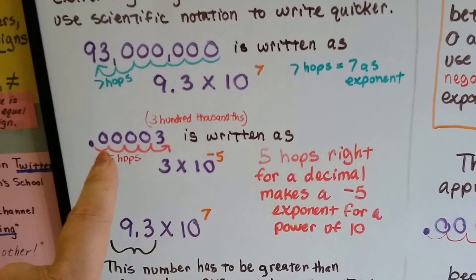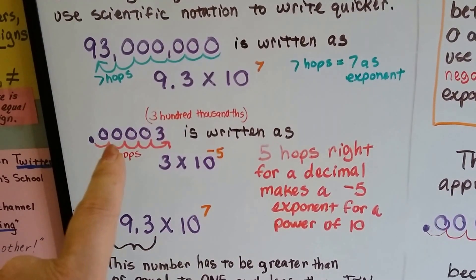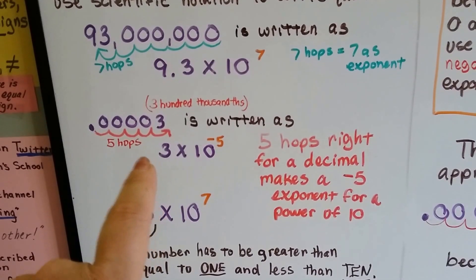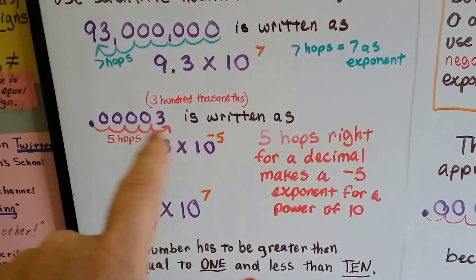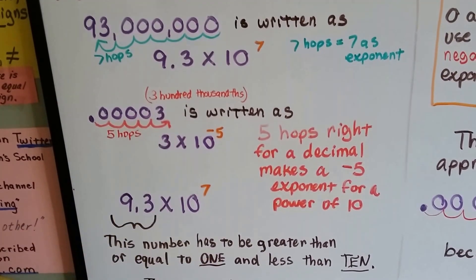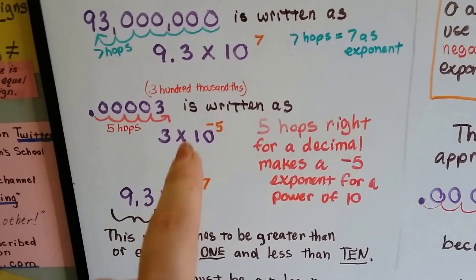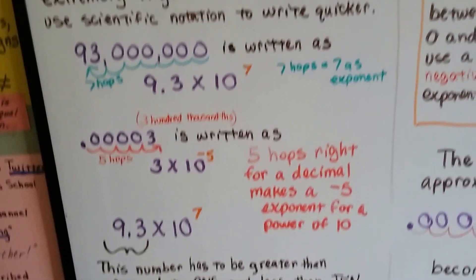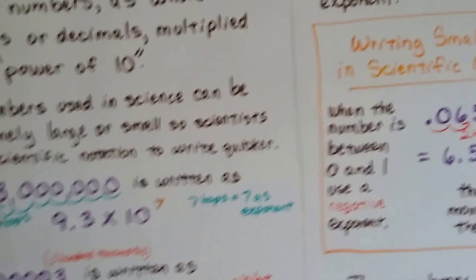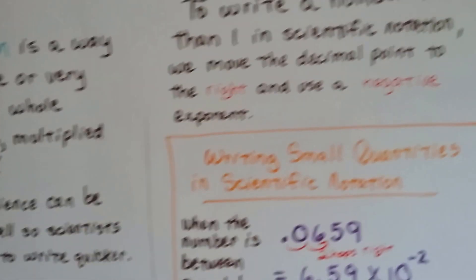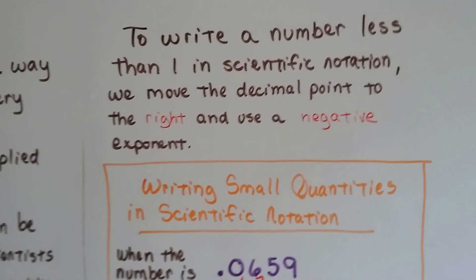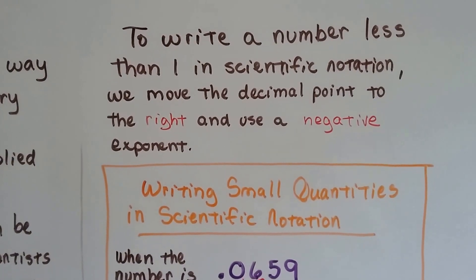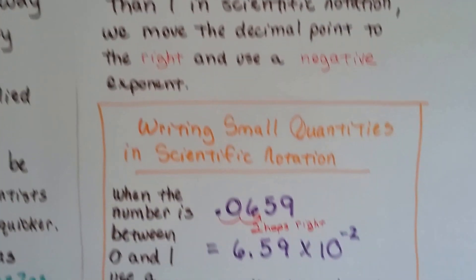For this number, three hundred thousandths, five hops to the right for that decimal point is going to make a negative five exponent for that power of 10. So to write a number less than one in scientific notation, we move the decimal point to the right and use a negative exponent.